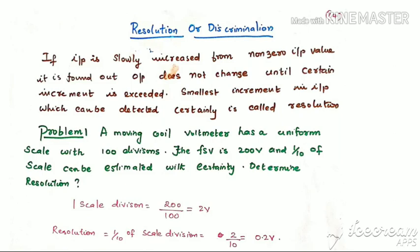Let us see one problem. A moving coil voltmeter has a uniform scale with 100 divisions. The full scale value (FSV) is 200 volts and 1/10 of a scale division can be estimated with certainty. Determine resolution. One scale division is 200 volts divided by 100 divisions, which equals 2 volts. Resolution is 1/10 of 2, which is 0.2 volt.